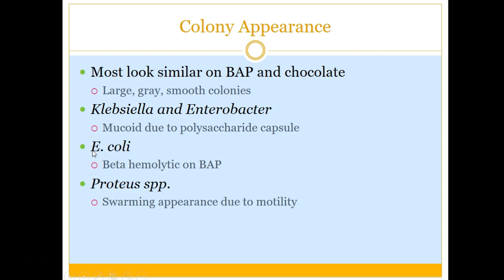E. coli is a large gray colony and usually has beta hemolysis to it. Not all strains have beta hemolysis, but for this purpose, beta hemolysis is the typical characteristic of E. coli.